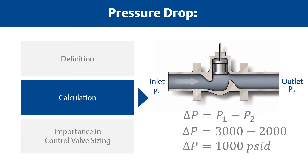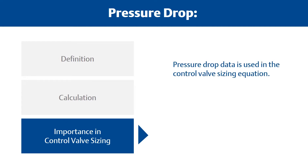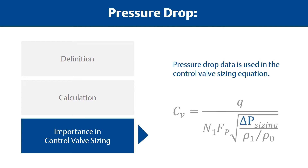If the flow rate is going to vary, repeat the calculation of P1 and P2 at each flow rate. Pressure drop data is used in the control valve sizing equation and is critical for proper valve selection.